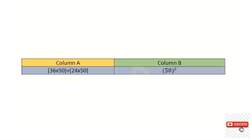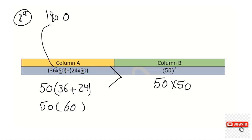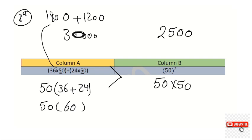Regarding question number 16: comparing 36 times 50 plus 24 times 50 versus 50 squared. Factor out 50 from the left side: 50 times (36 + 24) = 50 times 60 = 3,000. The right side is 50 squared = 2,500. So 3,000 is greater than 2,500, and the right-hand side is the greatest.